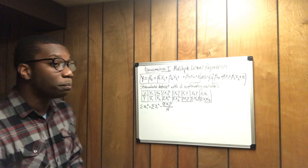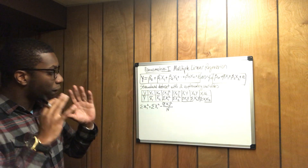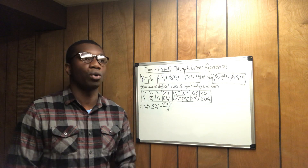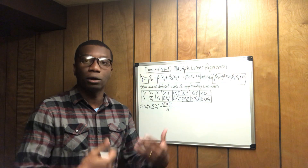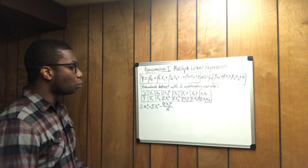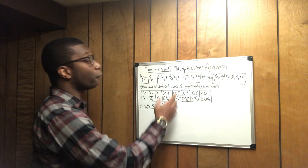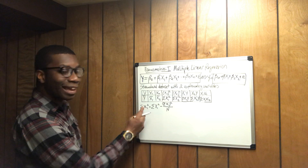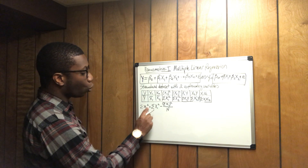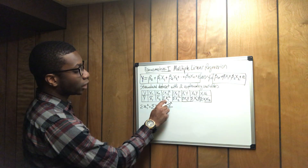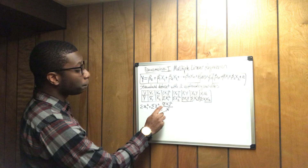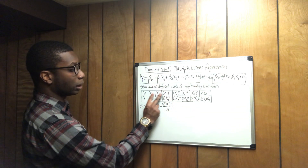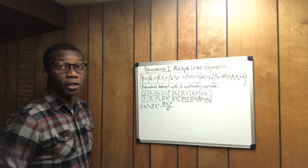Here we're going to determine the values needed to actually calculate the slope — we won't calculate the slope today. As you can see, the first quantity is the sum of x1 squared, which equals the summation of x1 squared minus the sum of x1 (the total of x1, squared) divided by the number of observations in your data.